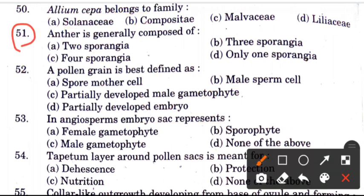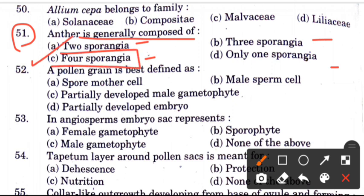Question 51: An anther is generally composed of — options are 2 sporangia, 3 sporangia, 4 sporangia, or only 1 sporangium. The answer is C, 4 sporangia.